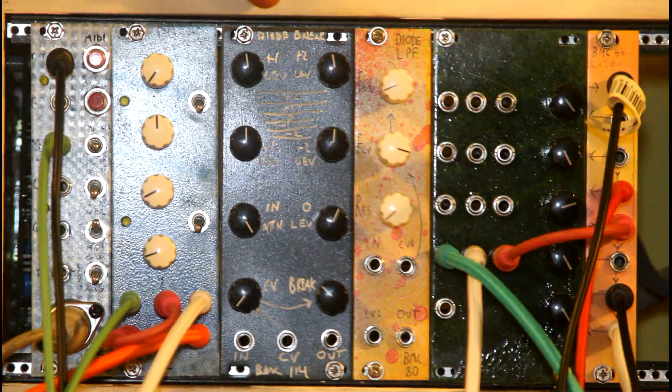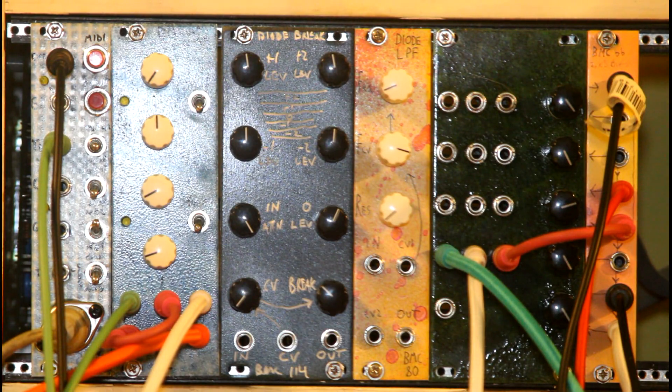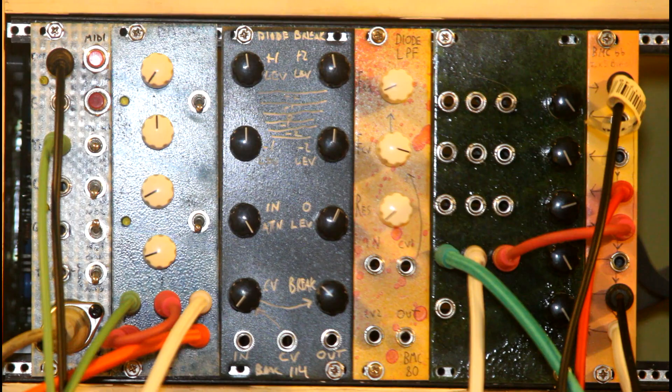This is the new diode break wave shaper. What this does is it takes an input signal, a waveform, and splits it up into five different wave bands.